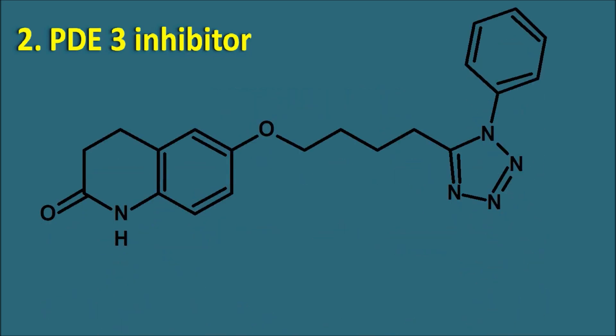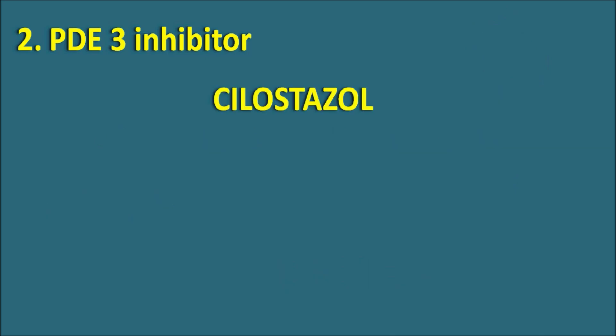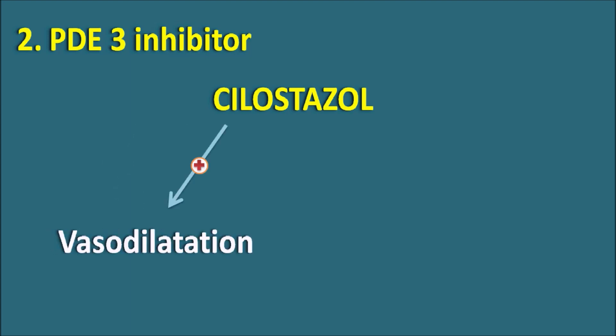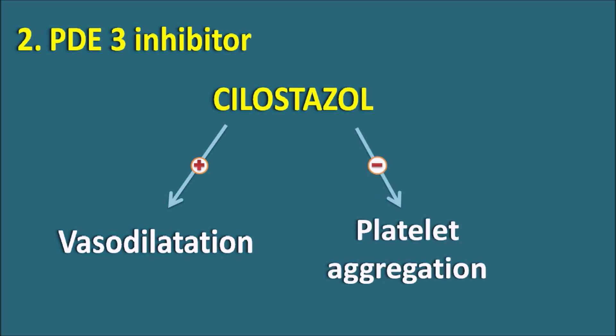Similarly, another drug is cilostazol. Cilostazol, just like dipyridamole, can produce two actions: it can increase vasodilatation by acting on vascular smooth muscle, as well as act on the platelets to inhibit platelet aggregation. So cilostazol is both a vasodilator and an anti-platelet agent.